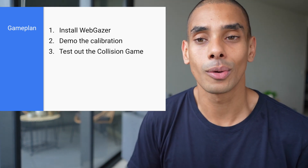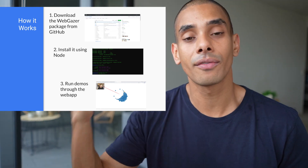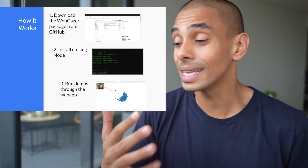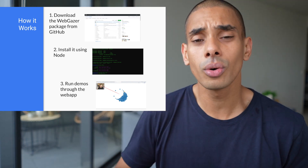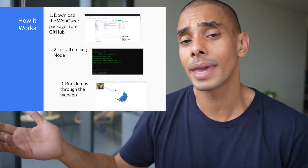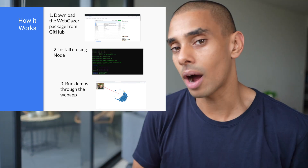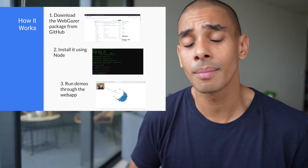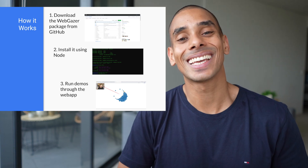Let's take a look at how this is all going to work. We're going to download WebGazer from GitHub — it's all available as an open source library — then install it using Node, and run it through our browser. The cool thing about this is that it just leverages a commercial webcam, so whatever webcam you've got on your computer, you'll be able to perform iris tracking. The demos are pretty cool and you'll be able to see it working in real time reasonably quickly.